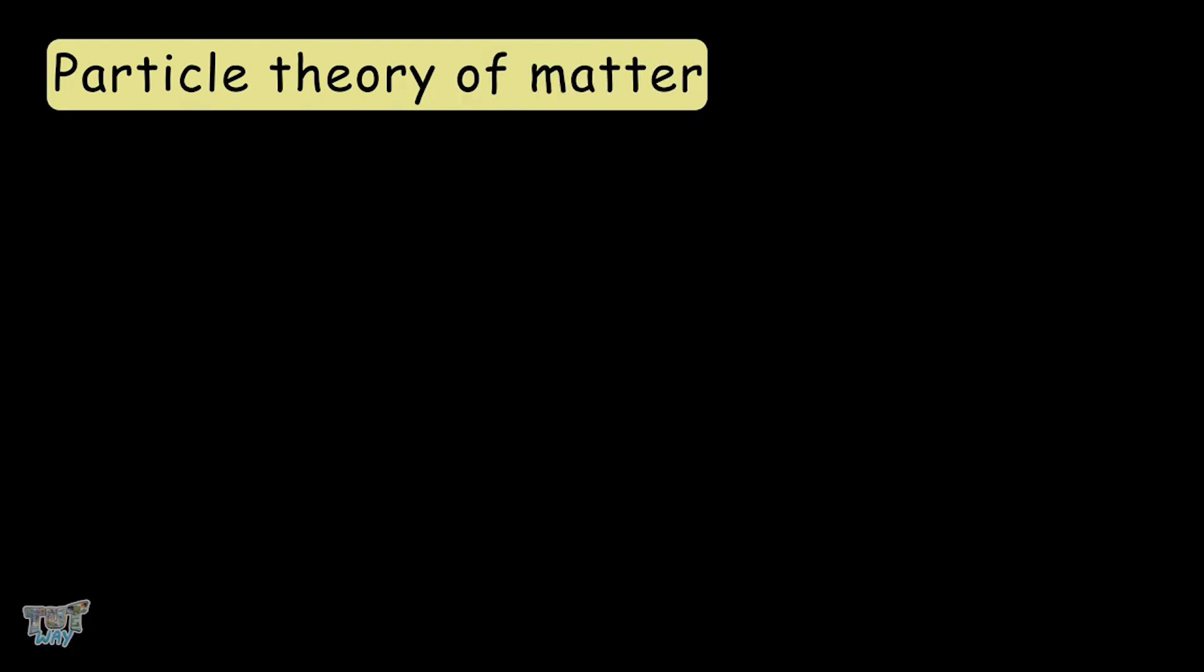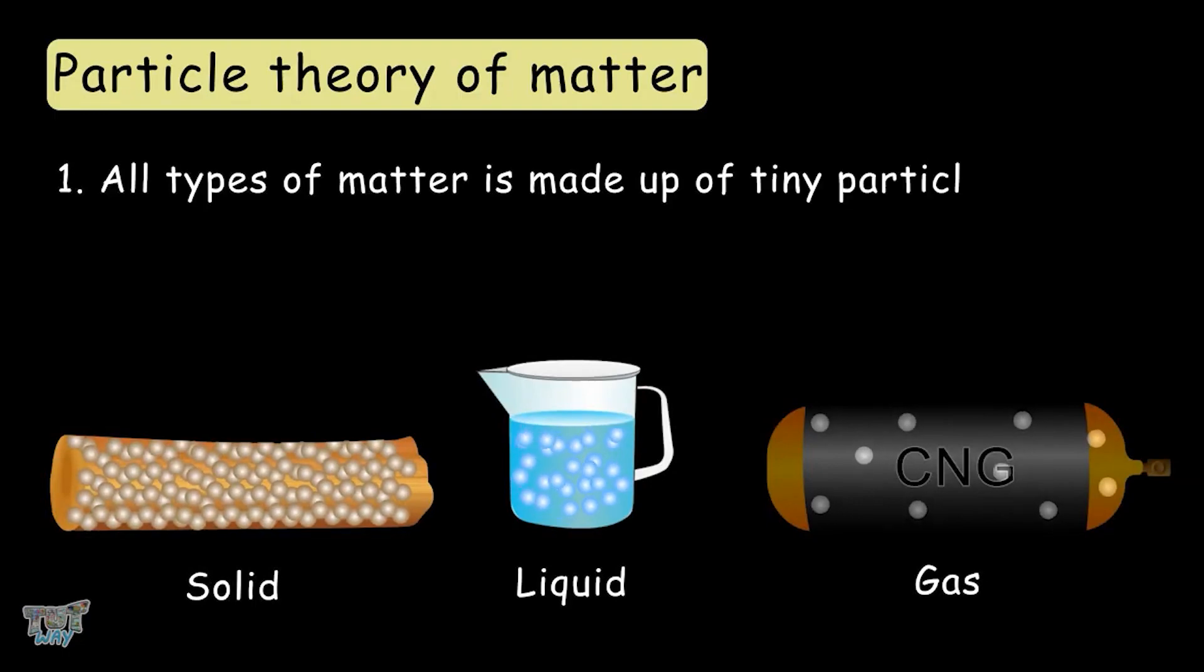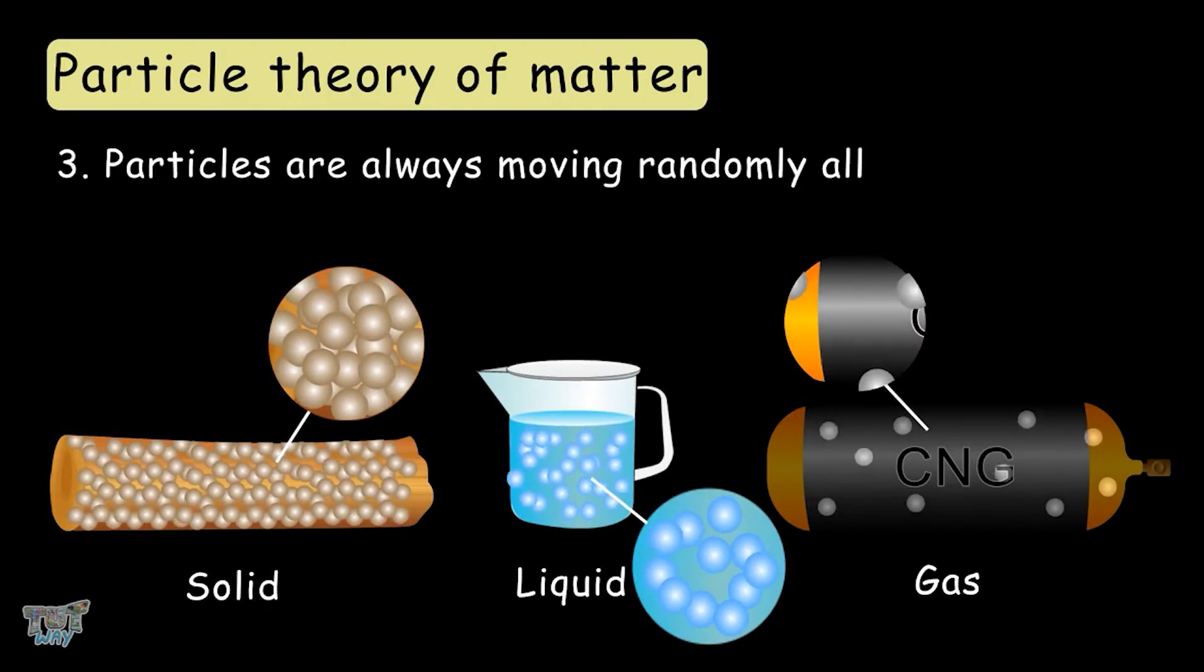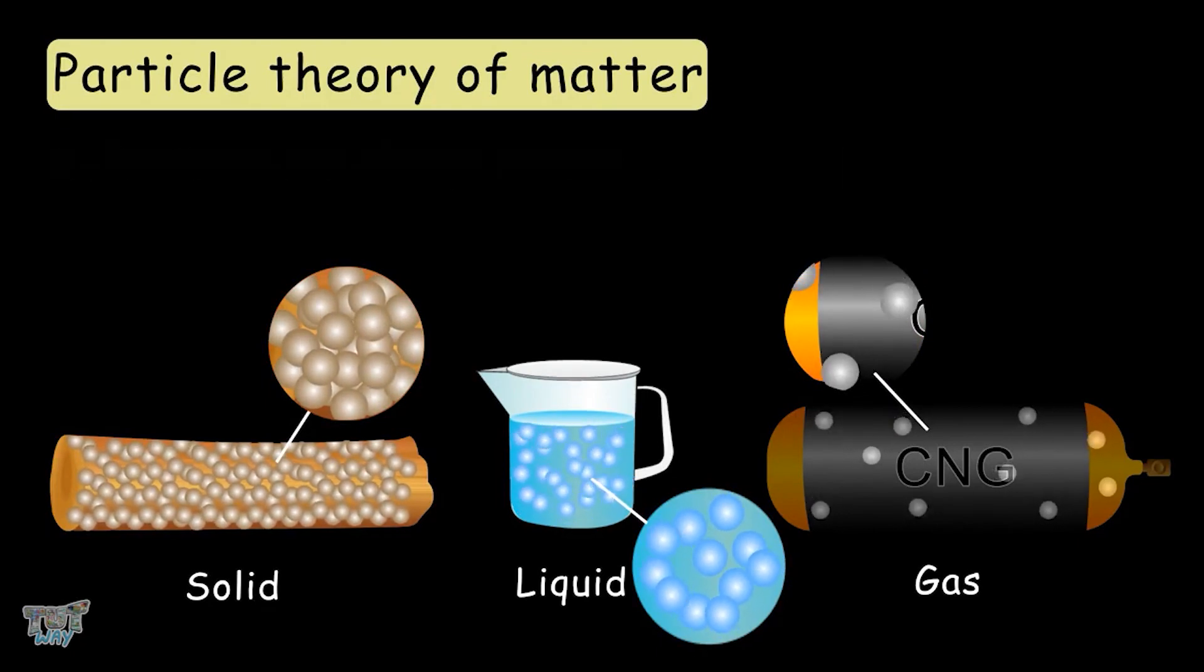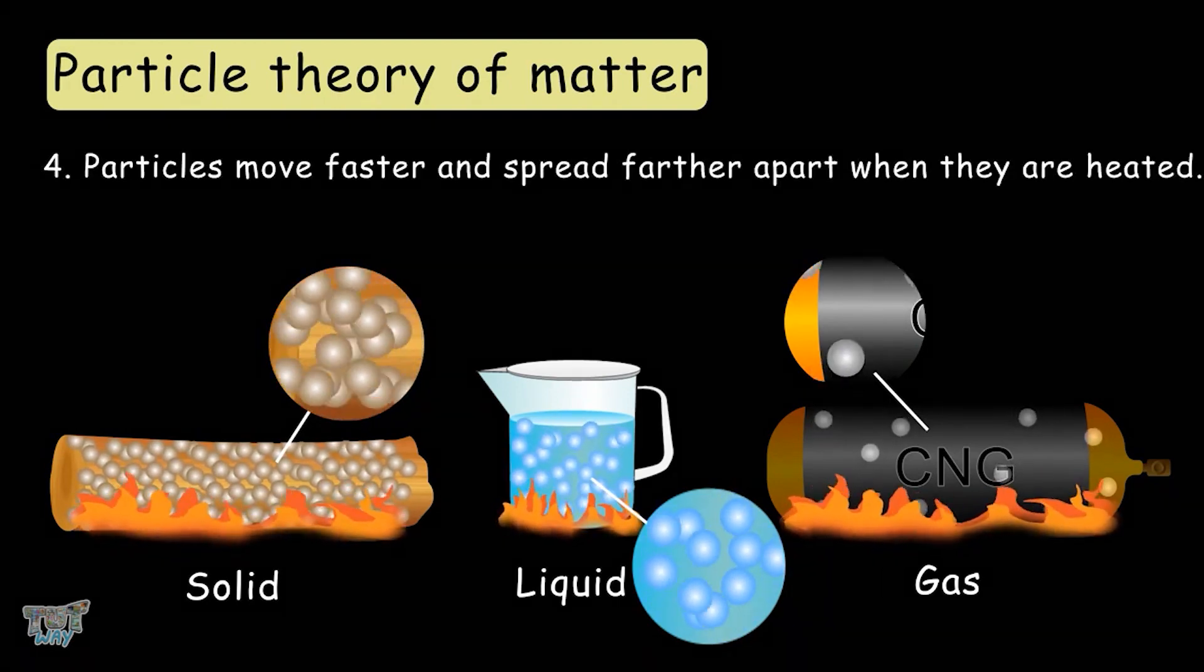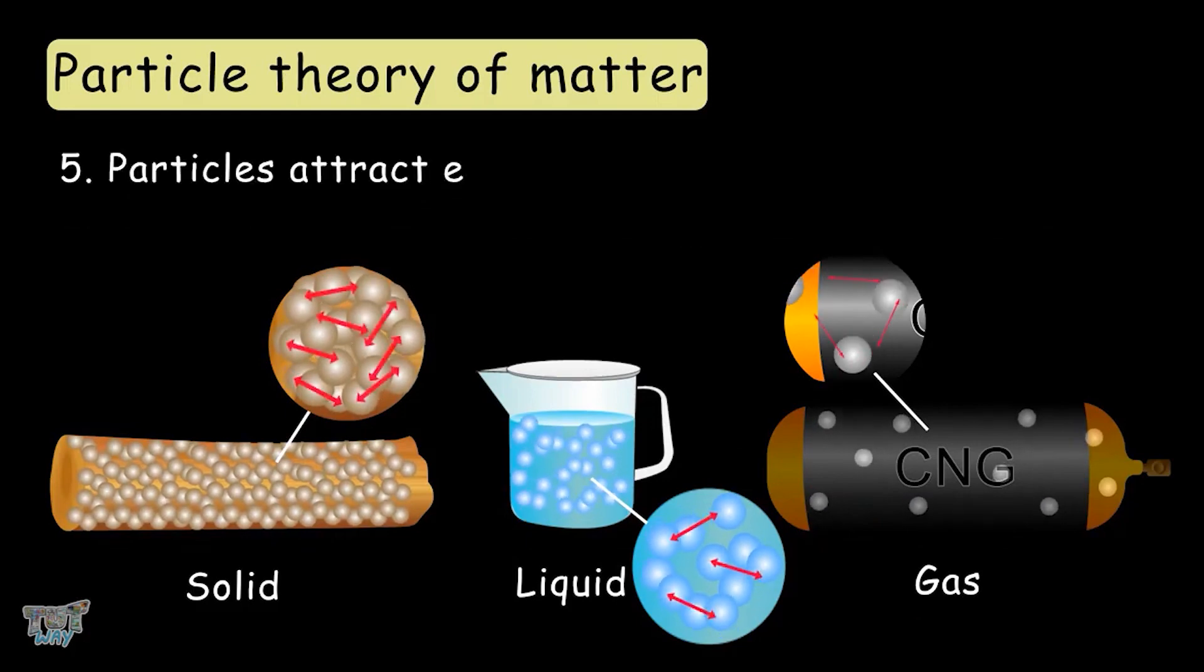The key points of the particle theory are all types of matter are made up of tiny particles. Particles have empty spaces between them. Particles are always moving randomly at all times. Particles move faster and spread farther apart when they are heated. And, all particles attract each other.